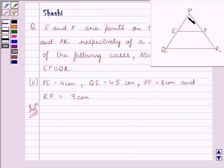Now, in triangle PQR, E and F are the points on PQ and PR. We have to find if EF is parallel to QR. So first of all, we will find out the ratio PE upon EQ.